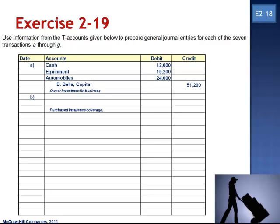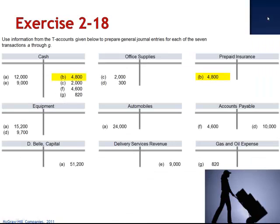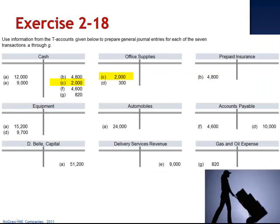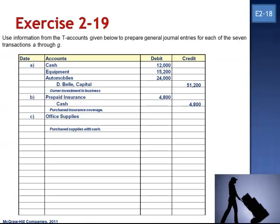In Letter B, we purchased insurance coverage, debiting prepaid insurance and crediting cash. Our journal entry is a debit to prepaid insurance $4,800 and a credit to cash. In Letter C, we purchased supplies with cash, debiting office supplies $2,000 and crediting cash. Our journal entry debits office supplies and credits cash for $2,000.